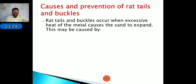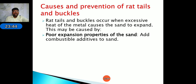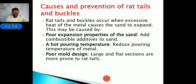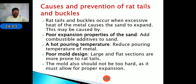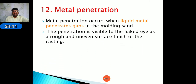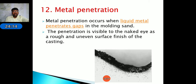Rat tails and buckles occur when excessive heat of the metal causes the molding sand to expand. Causes include poor expansion properties of the sand and high pouring temperature. Remedies: reduce pouring temperature of metal and ensure the mold is not too hard. Metal penetration occurs when metal penetrates into the molding sand due to high pressure or low strength of the molding sand.